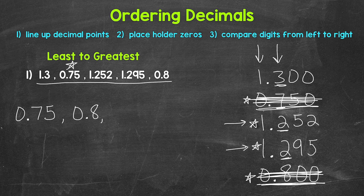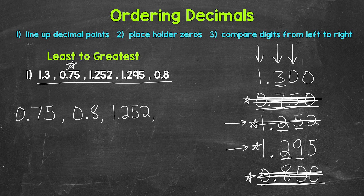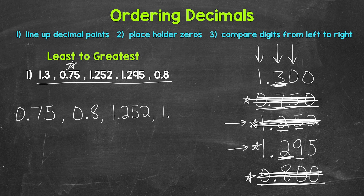Both have a two in the tenths, so we need to move over to the next place — the hundredths place — and compare those digits. We have a five and a nine. Five is less than nine, so that comes next: one and 252 thousandths. We can cross this off. Another way to think about that: 252 thousandths is less than 295 thousandths. Now we are down to our last two decimals. We have ones in the ones place, so let's move to the tenths. We have a three and a two. Two is less than three, so one and 295 thousandths comes next. So we can cross this off.